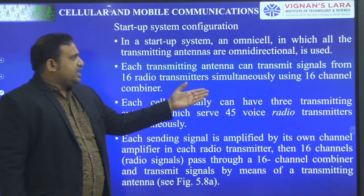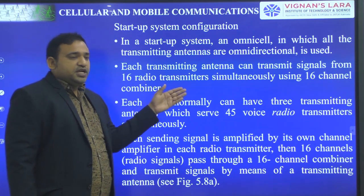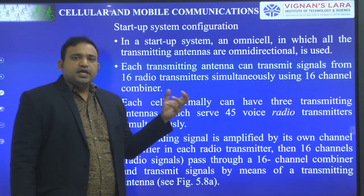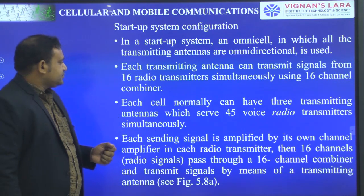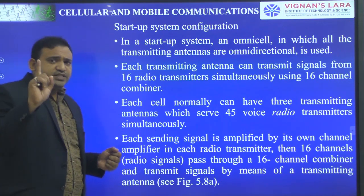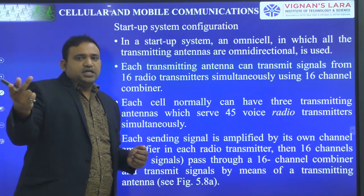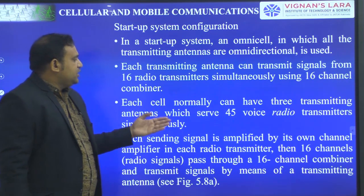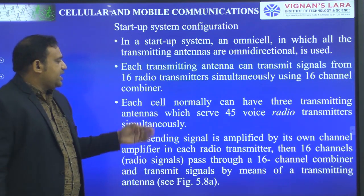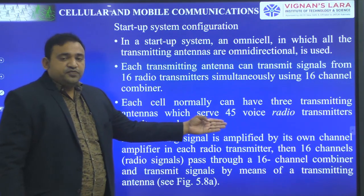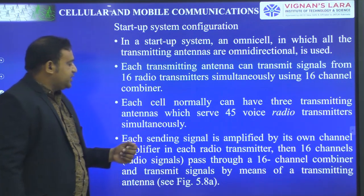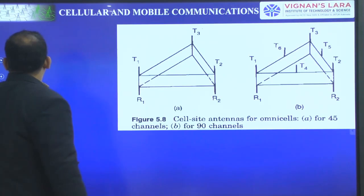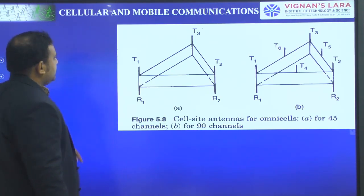Each transmitting antenna can transmit signals from 16 radiotransmitters using a 16-channel combiner, so each antenna will support 16 channels. Each cell normally can have 3 transmitting antennas which serve 45 voice radiotransmitters simultaneously. Let us see the figure — then we will understand better.